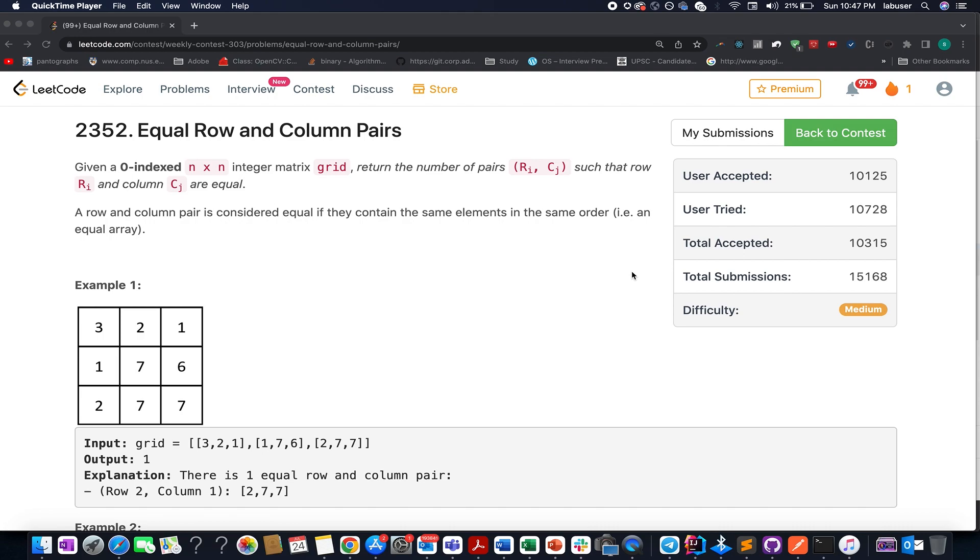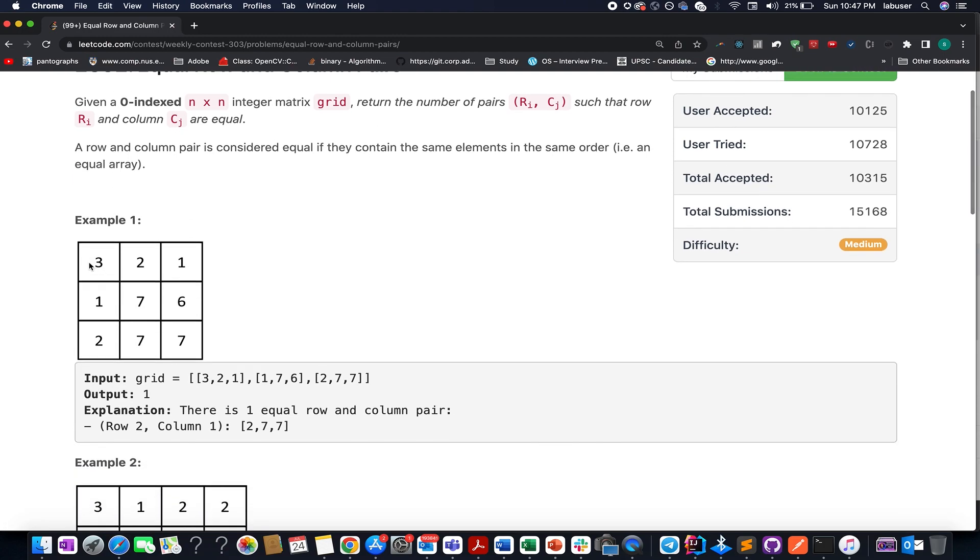Here in this question, we are given a matrix and we need to identify the number of pairs of a row and a column such that all the elements in that row are equal to that of the column. For example, here we are given a matrix and if you see there is one matching case, which is 277.